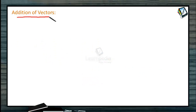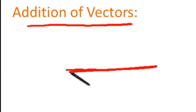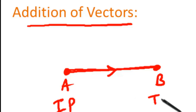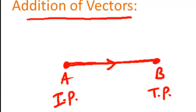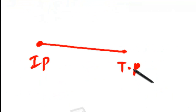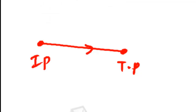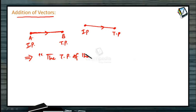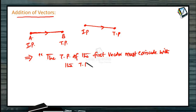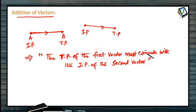First of all, let us define what we mean by the addition of vectors. As we have seen previously, vectors are determined by means of a directed line segment with an initial point and a terminal point. If you have another vector whose initial point and terminal point are defined, the terminal point of the first vector must coincide with the initial point of the second vector. Then only can we find the addition of the two vectors.